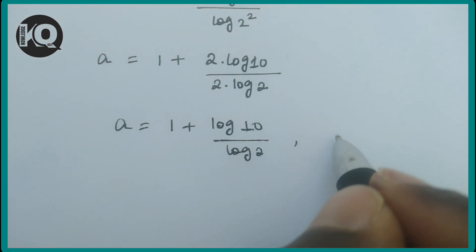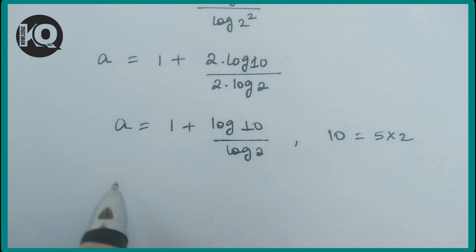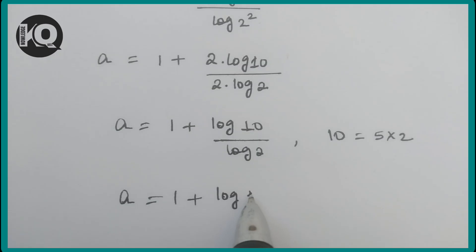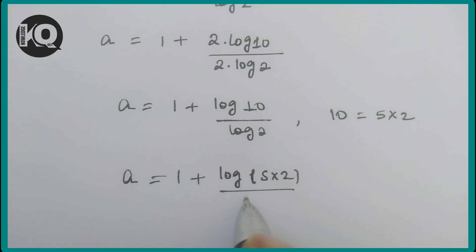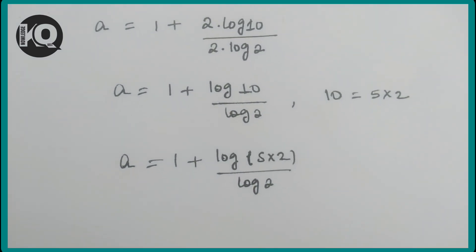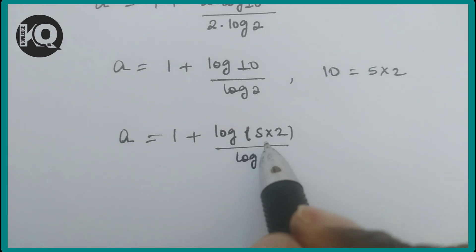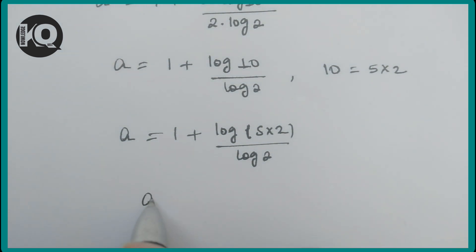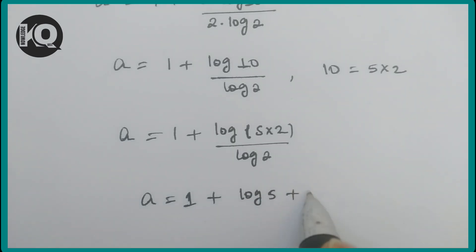We can simplify by writing 10 as 5 times 2. So a = 1 + log(5 × 2)/log(2). Applying the product rule of logarithms, this becomes a = 1 + [log(5) + log(2)] / log(2).